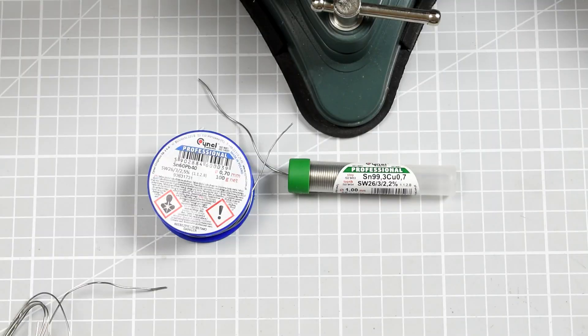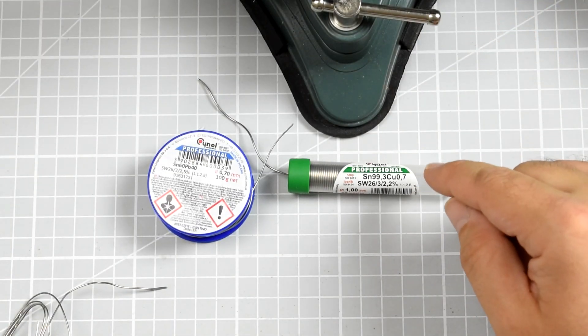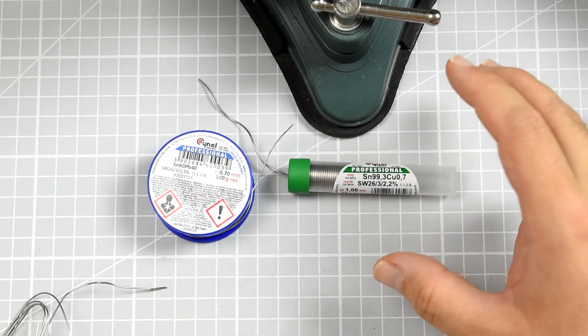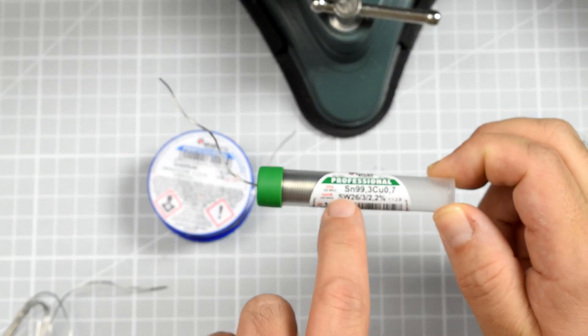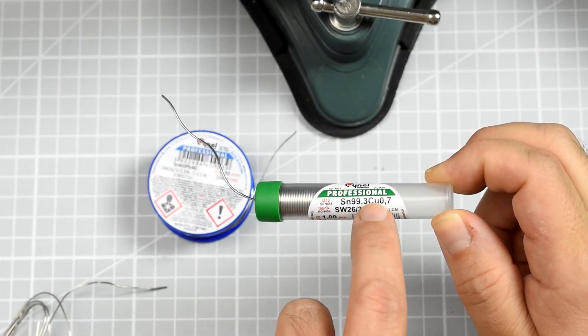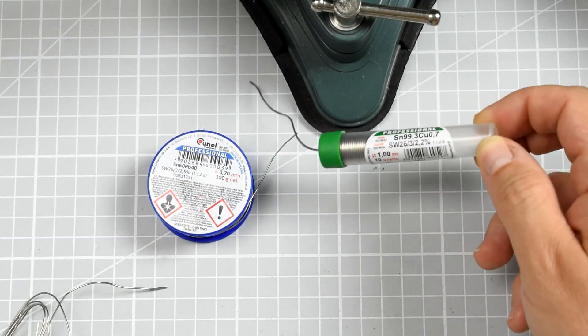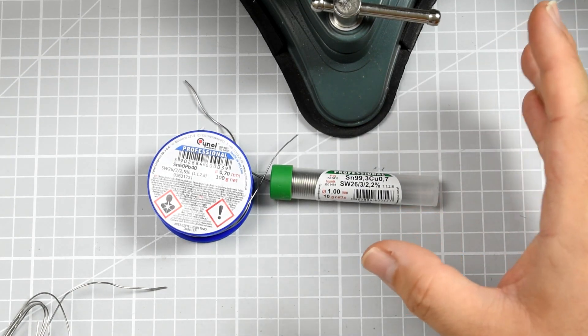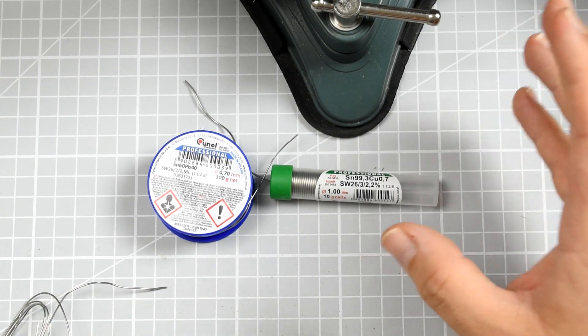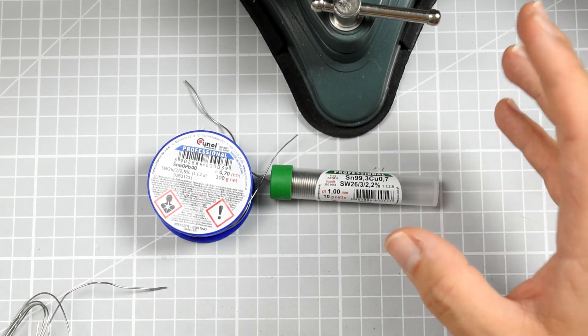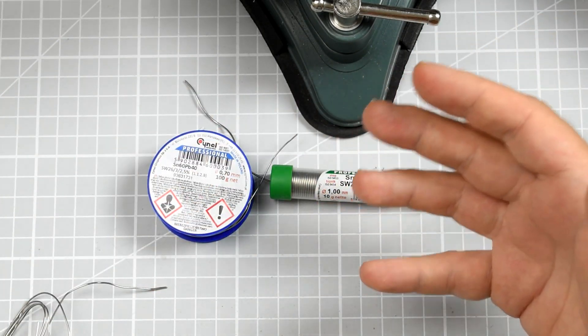Let's wrap it up. Was there progress in the technology of the leadless solder over the last years? Yes, definitely there was progress. And the example of the Cynel Professional SN99.3CU0.7 SW26 is an example that yes, right now the good leadless solder can be used at home just for your DIY projects, soldering at home. Application is much simpler than years ago. It just works.